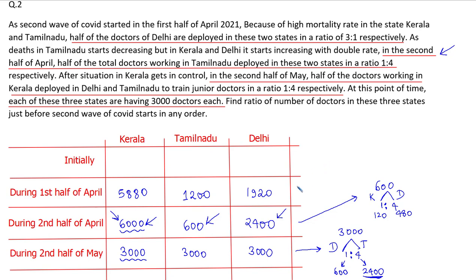Now, during the first half of April, half of the doctors of Delhi are deployed in these two states — Kerala and Tamil Nadu — in a ratio of 3:1. During the first half of April, Delhi has 1920 doctors. So initially Delhi must have had double that: 2 × 1920 = 3840 doctors.